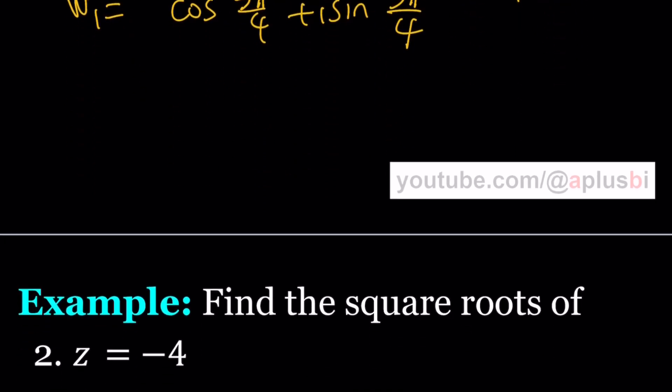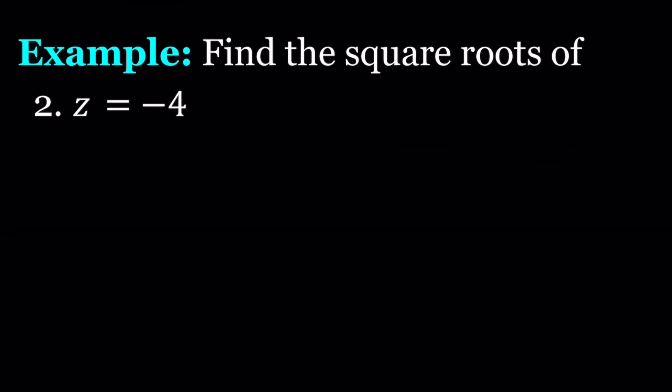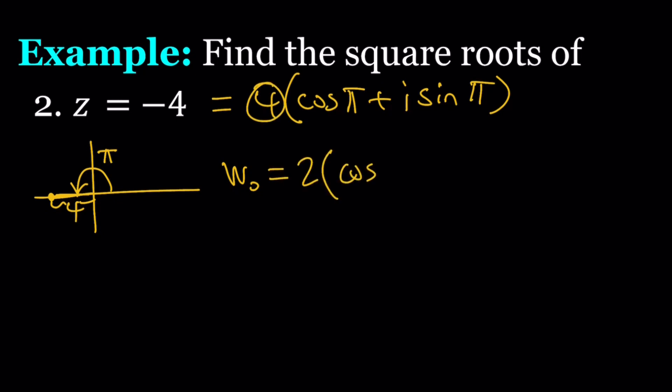Let's go ahead and take a look at another example. This one is not given in polar form, so I'm going to quickly graph it. Negative 4 is negative 4 plus 0i. So its argument is going to be pi radians, and its modulus is going to be 4. So z can be written as 4 times cosine pi plus i sine pi. And then I can go ahead and just find the first one, w0 is the first square root. I need the square root of 4, which is 2, and then cut this angle in half. Half of pi is pi over 2. And I'm done. You see how easy that is?